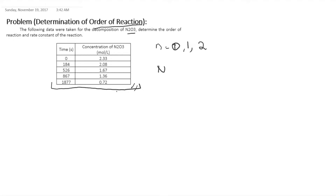The decomposition reaction of N2O3 gives NO plus NO2. We don't know whether this reaction follows zeroth order, first order, or second order, but we have the experimental data, so we'll have a way to determine the order of reaction.